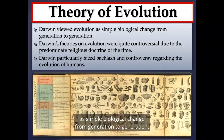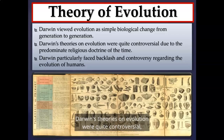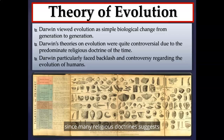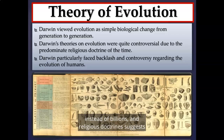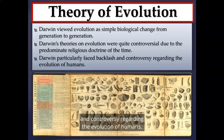Darwin viewed evolution as simple biological change from generation to generation. Later in Chapter 4, we'll learn how to calculate genotypic frequencies using the Hardy-Weinberg equation. Darwin's theories were quite controversial, predominantly due to religious doctrine of the time — many doctrines suggest the planet is thousands of years old, not billions, and that a creator made all organisms in their current form. Darwin particularly faced backlash regarding the evolution of humans.